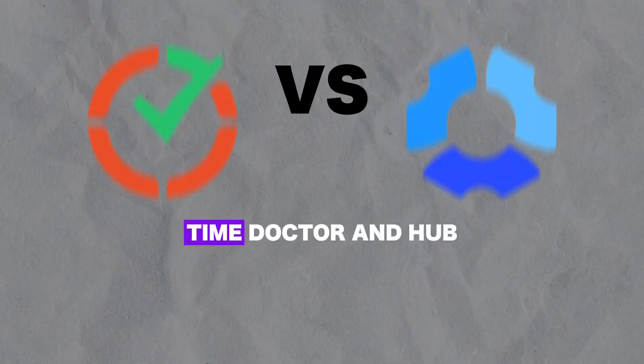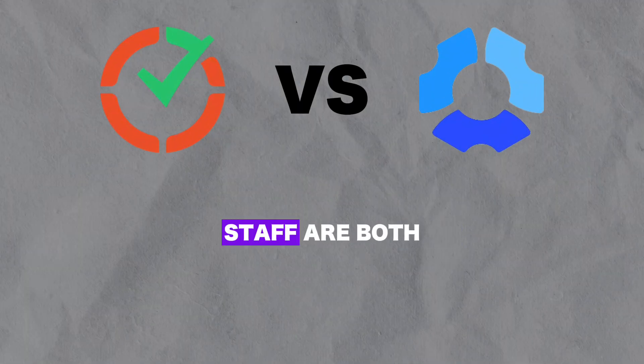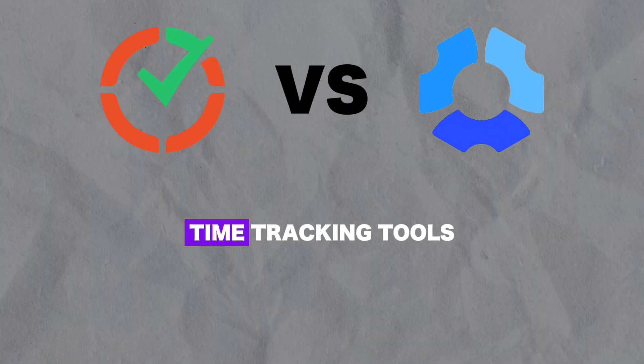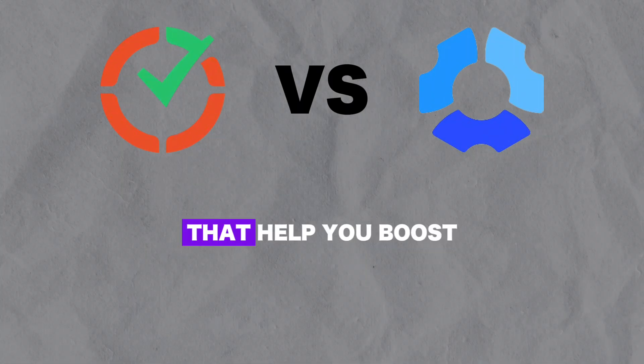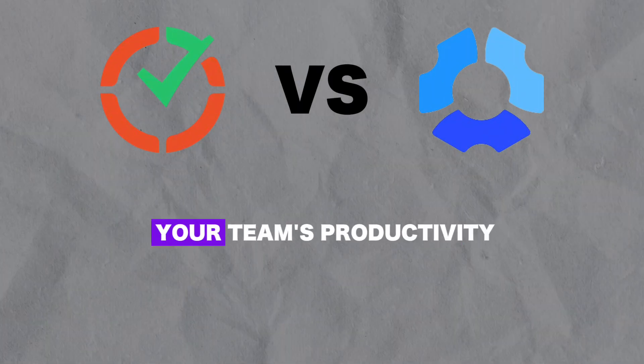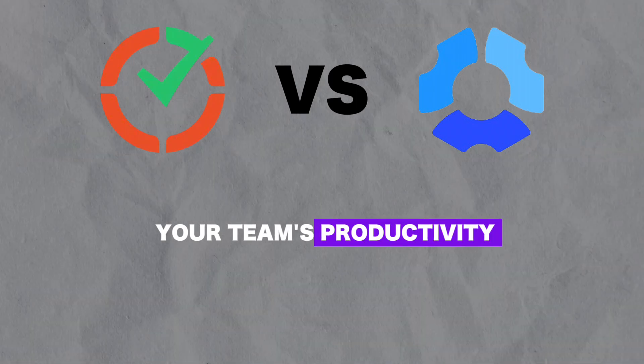It's important to go over what these tools do exactly and who they're for. Time Doctor and Hubstaff are both time tracking tools that help you boost your team's productivity. Now let's compare their key features.